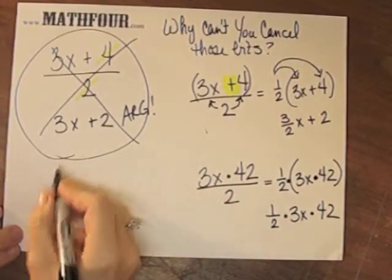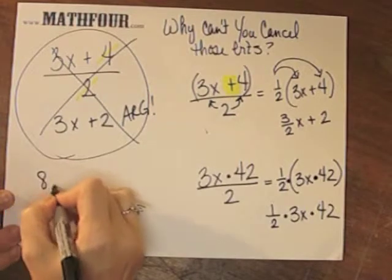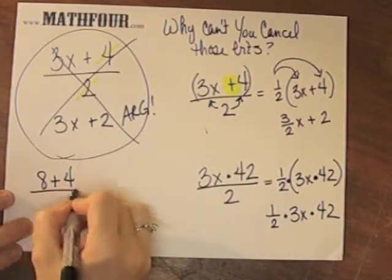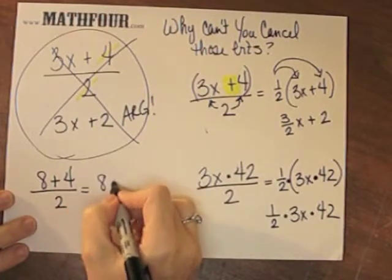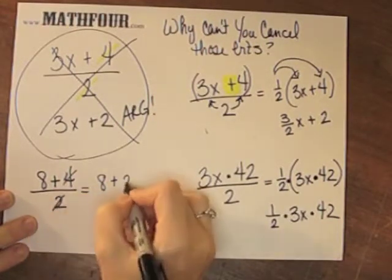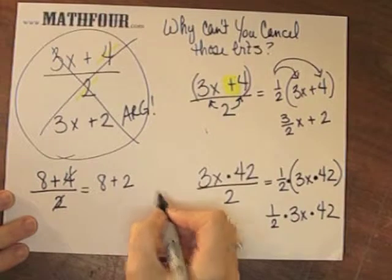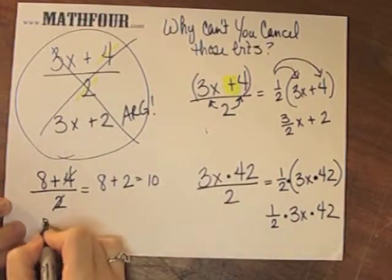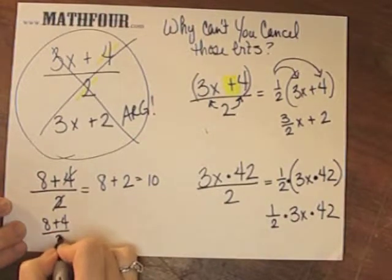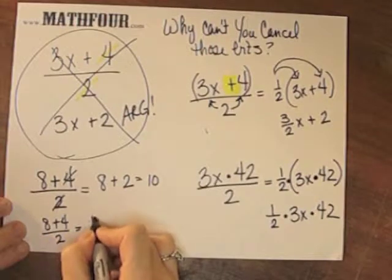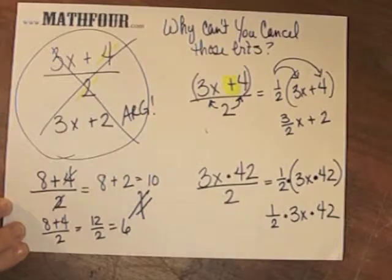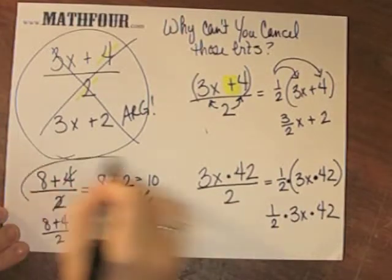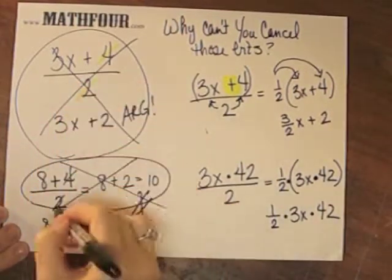Consider it with regular numbers. If I had 8 plus 4 over 2, would I be able to say this is 8 plus 2, which is 10? Is that the same as 8 plus 4, which is 12, over 2, which is 6? No, those are not the same. So this, which is the same as this, is another arc.